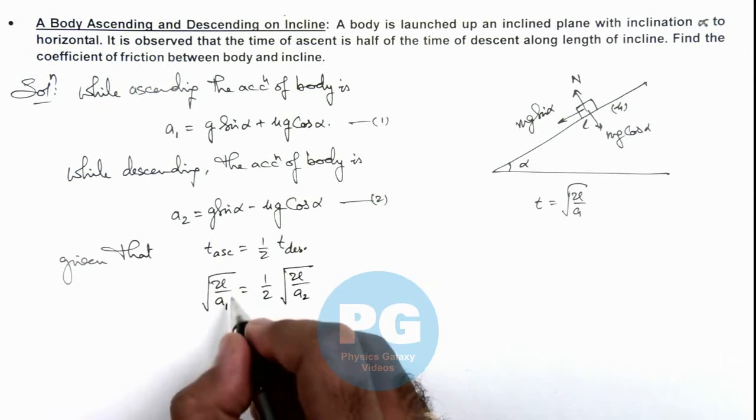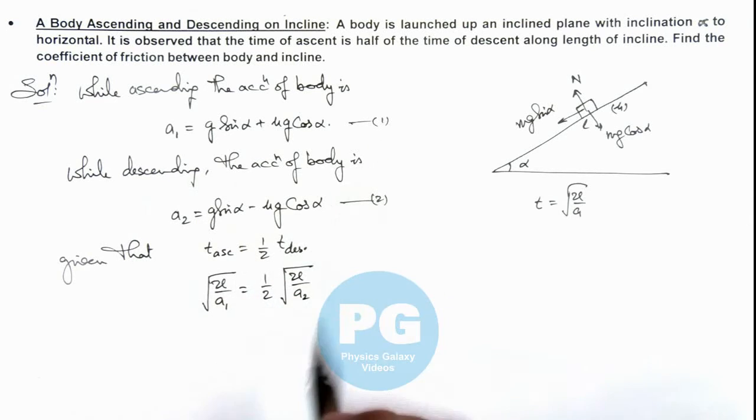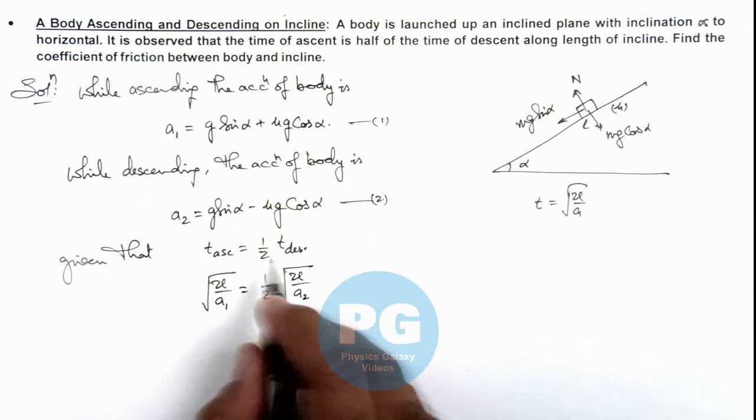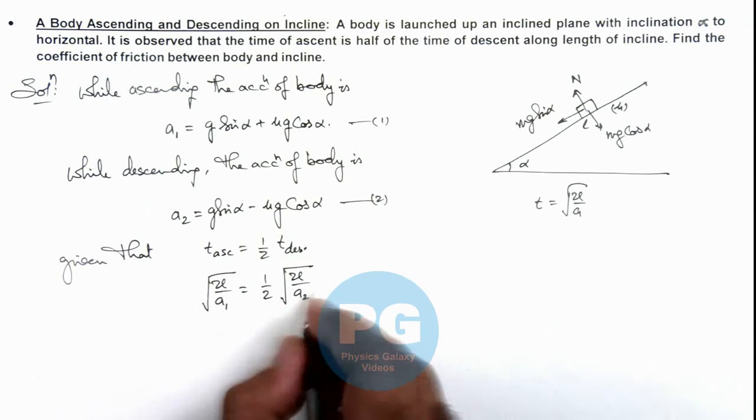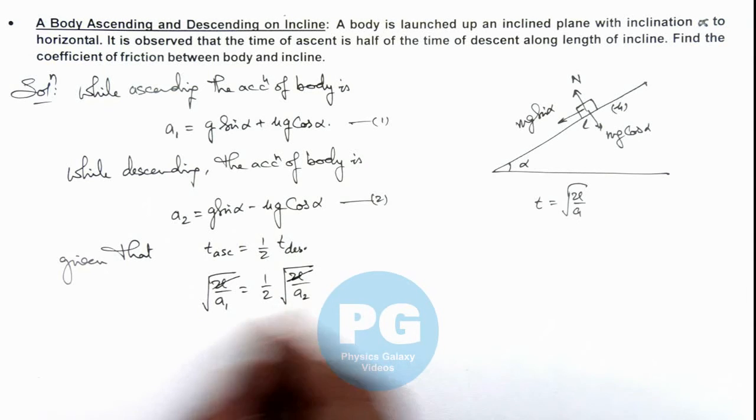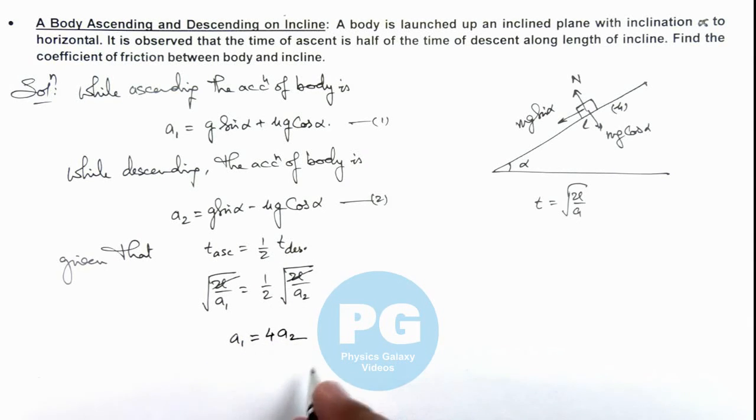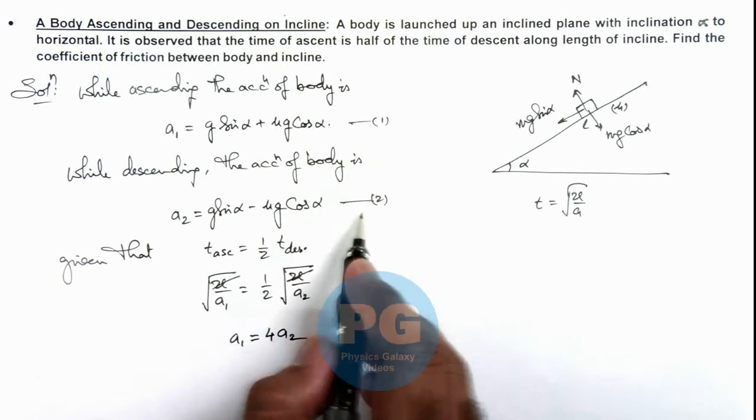Here we are taking acceleration a₁ and a₂ from equations 1 and 2 for ascending and descending cases. So further simplifying this or squaring the terms, here you can see 2l gets cancelled out and we can write a₁ is equal to 4 times a₂. If we substitute the values of a₁ and a₂.